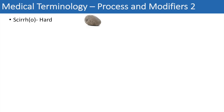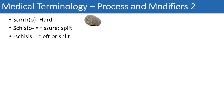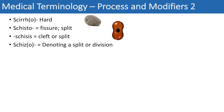Continuing with processes and modifiers: sclero means hard — sclerous is another word you might hear in medicine. The next one is schisto, which means fissure or split, as in schistocyte. And the suffix -schisis means cleft or split. Schizo denotes a split or division — you can think of schizophrenia. Another suffix is -lucent, which means light-emitting, so a word you can think of is translucent, meaning light-emitting across something.